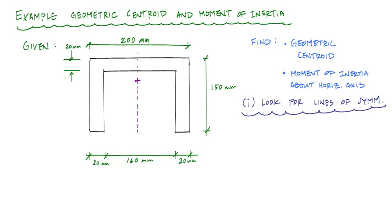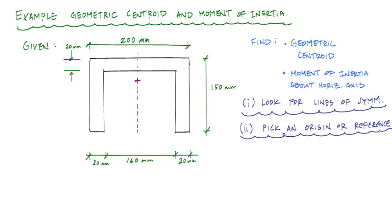The next thing we're supposed to do is select a datum or a reference to calculate or locate the geometric centroid. What we're really doing is picking a reference point, an origin — a point from which we're going to describe all our distances. I can make that point anywhere. For this problem, I'm going to choose this left-hand corner here, with a horizontal datum and a vertical datum.